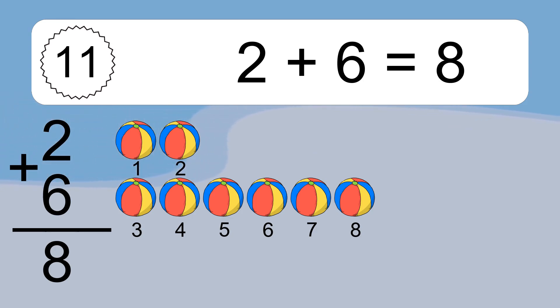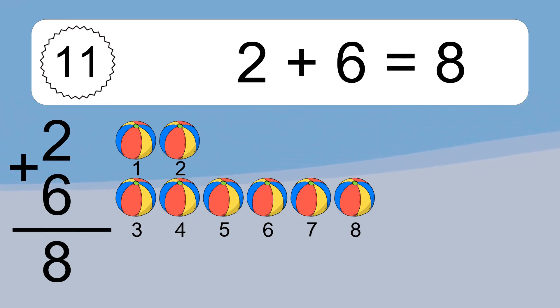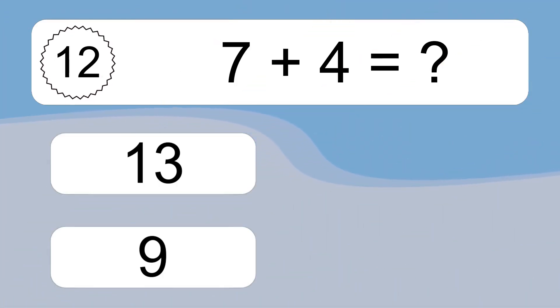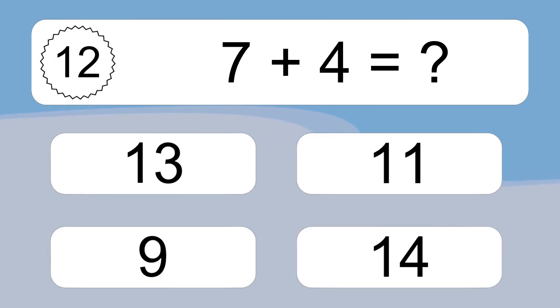Let's count it: 1, 2, 3, 4, 5, 6, 7, 8. Let's count it: 1, 2, 3. 7 plus 4 equals what?